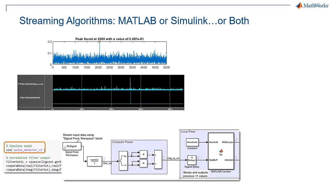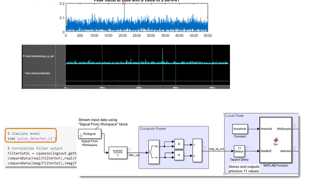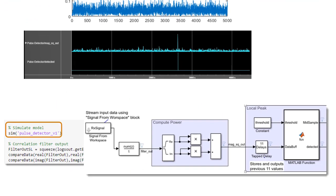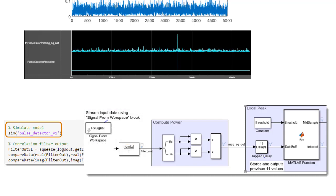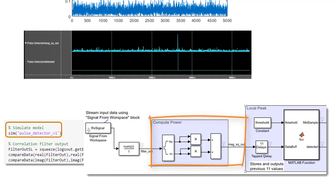We'll build this in Simulink while using some MATLAB too. We can still use the same test environment, getting the input from the from-workspace block there, and sending it back via to-workspace blocks. For the filter, we have a streaming FIR block. That's easy.